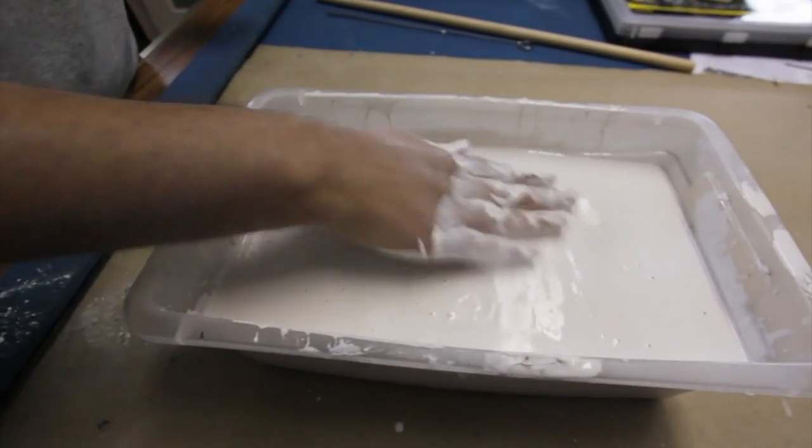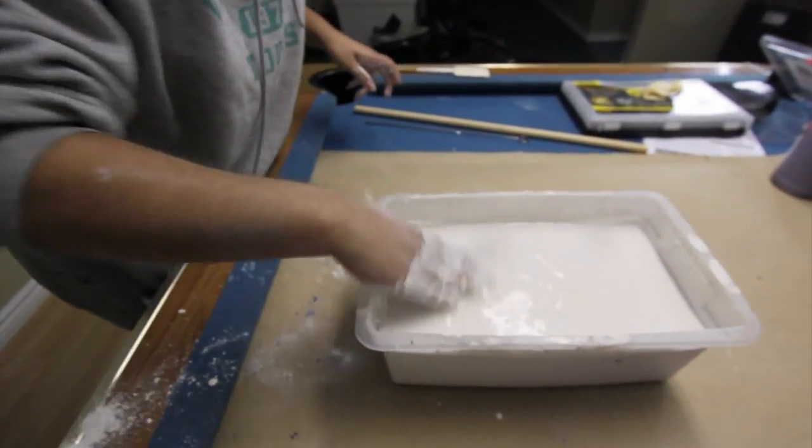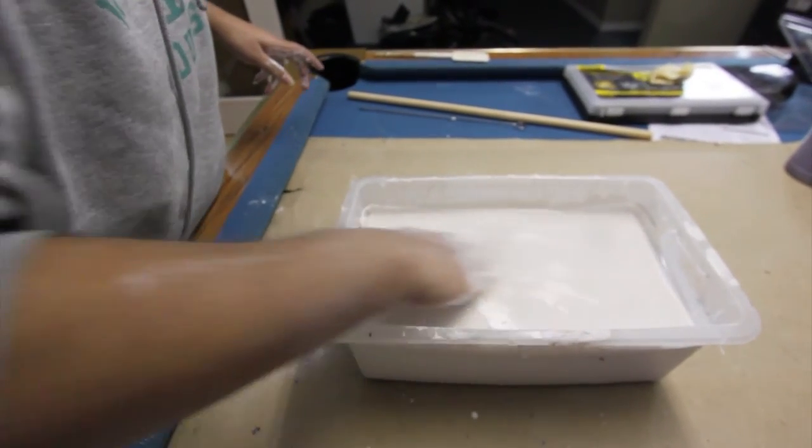You've got to work quickly. That's how you mix ultra cal 30 to pour your cast.